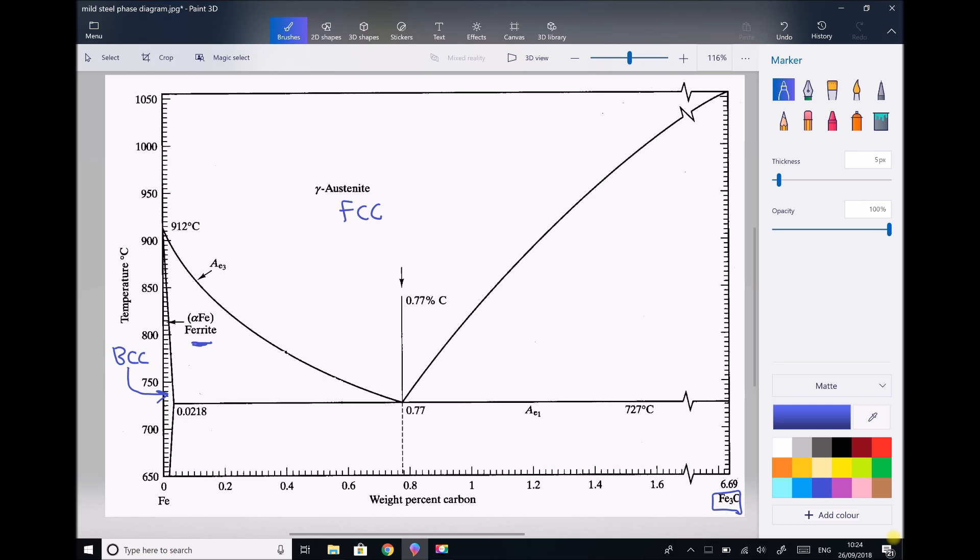In terms of our other regions, we have alpha plus gamma, which is a mixture of alpha iron BCC and gamma austenite FCC. We also have a region which is cementite Fe3C plus gamma. At the bottom we have our region which is alpha plus cementite. This laminated mixture of alpha and iron carbide is also known as pearlite. Alpha plus cementite will extend to both sides of our eutectoid point.